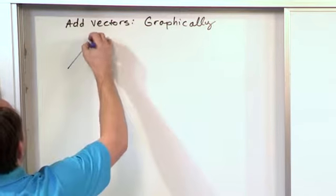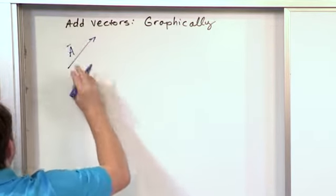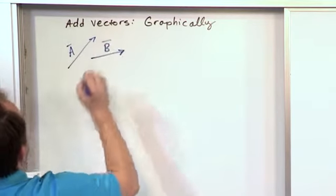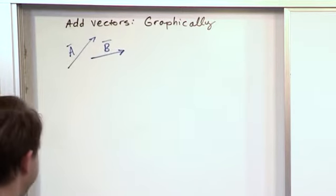So if we have two vectors, let's say I have a vector pointed this way and I'm calling it vector A. And I have a vector this way. I'm calling that guy vector B. And I wish to add these two vectors together.